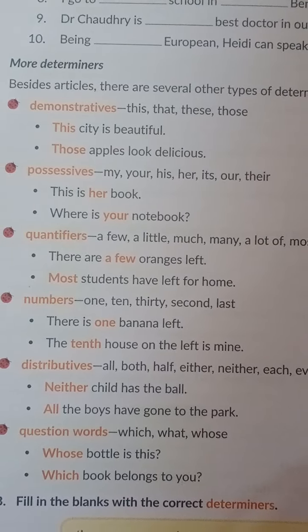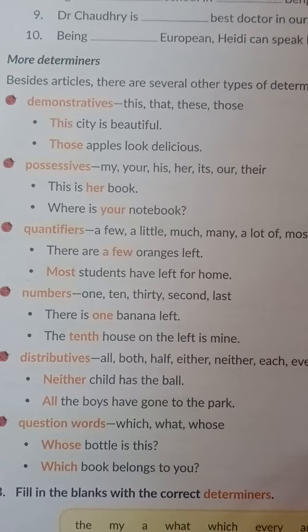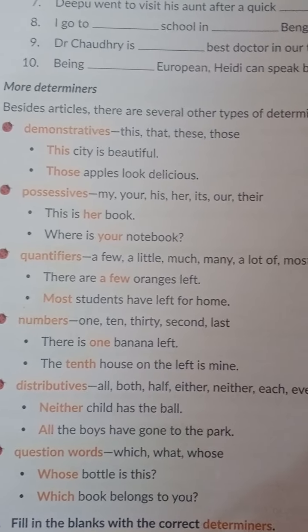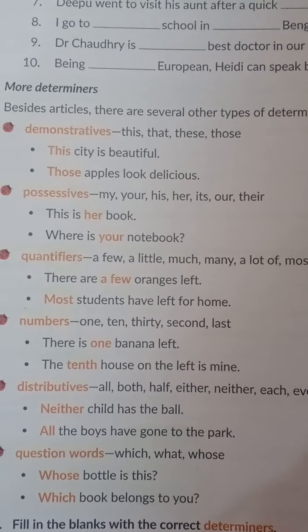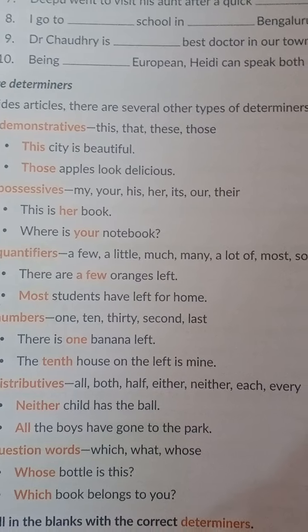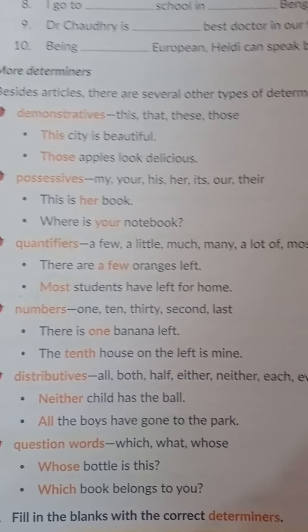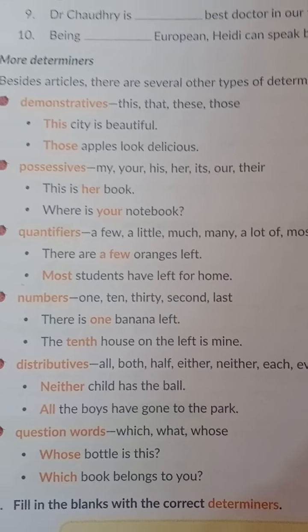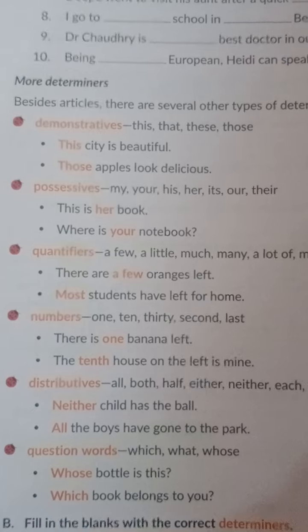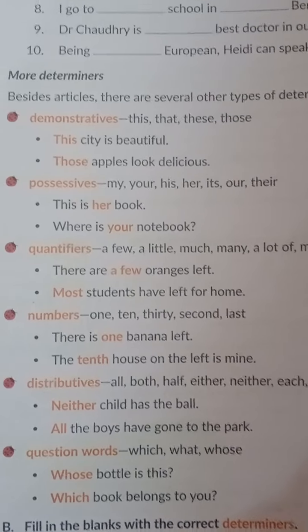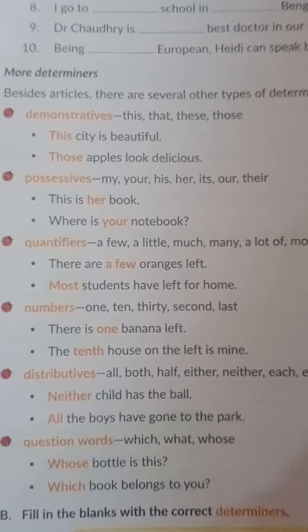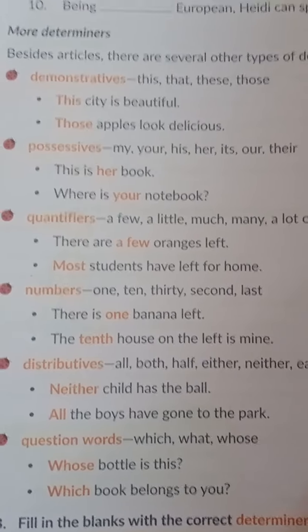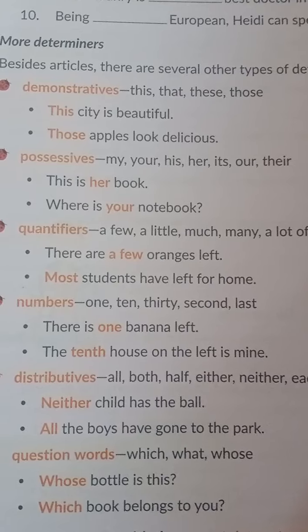Now let us see other determiners. Demonstrative means it shows something — like 'this', 'that', 'these'. For example: 'This city is beautiful,' 'These apples look delicious.' Demonstrative means it indicates or it shows something.